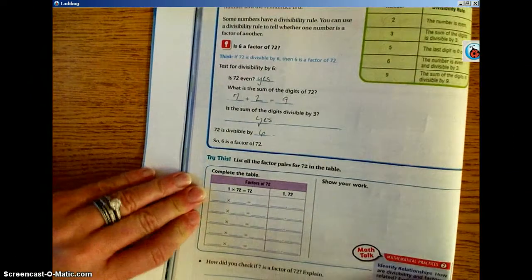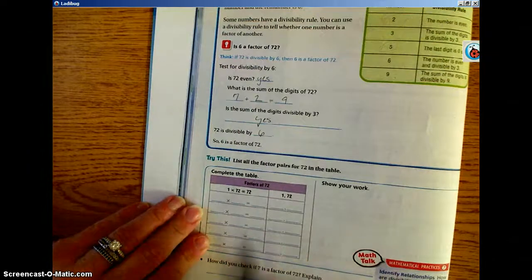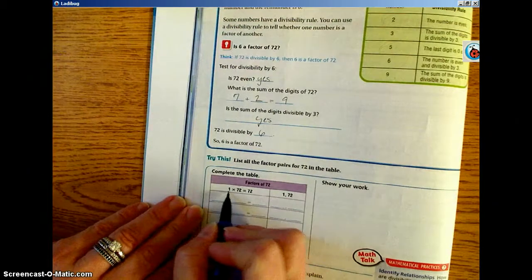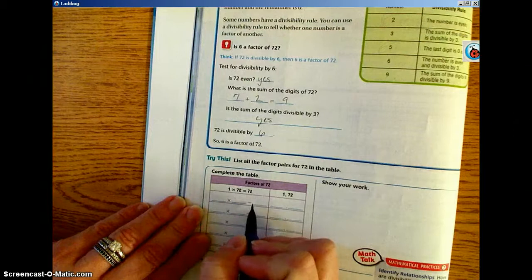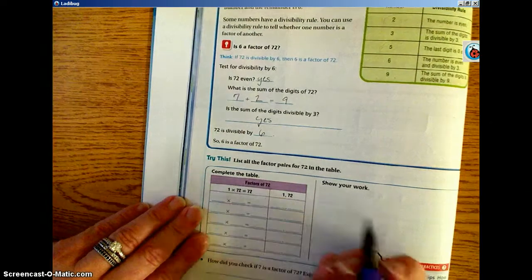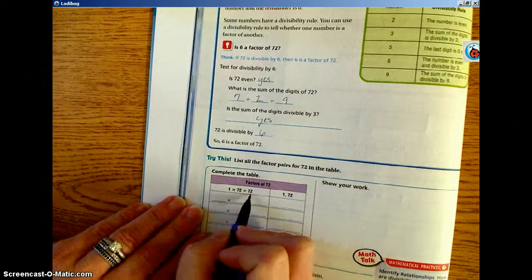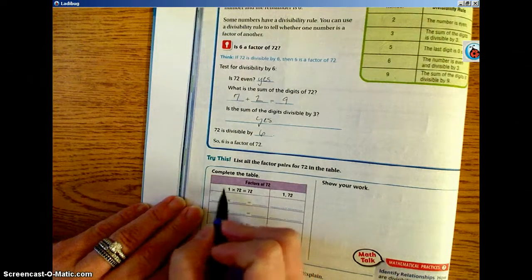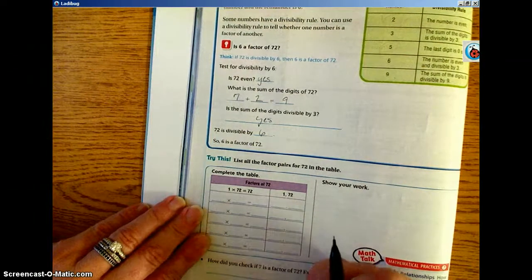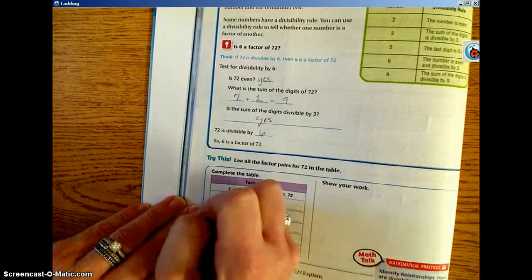Next, under the try this, it wants you to go through and see if you can come up with all the factor pairs. A factor pair is going to be a number times another number that's going to equal the number that you're looking for. We're looking for factors of 72. Simple one, 1 times the number is always going to be a factor. 1 and itself are always going to be factors of whatever number you're looking for. So 1 times 72 would work.